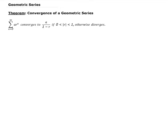In this lesson, we are going to prove the convergence of a geometric series. This geometric series will converge to A over 1 minus R if the geometric ratio is strictly between 0 and 1. Otherwise, it's going to diverge.